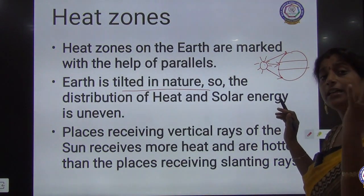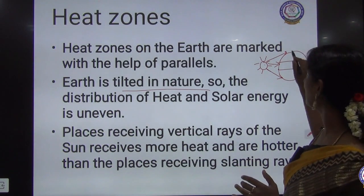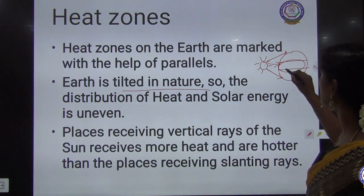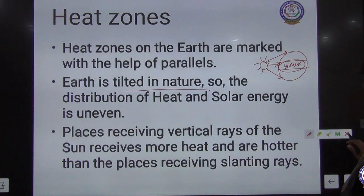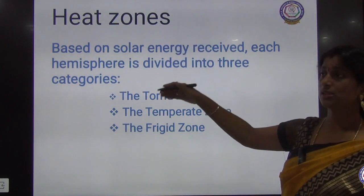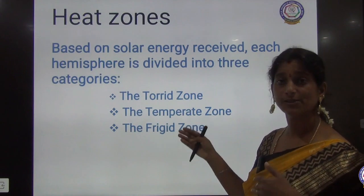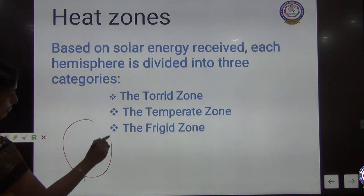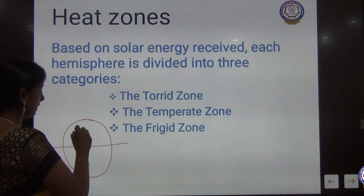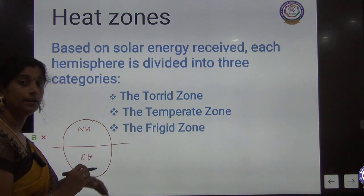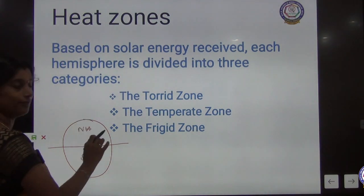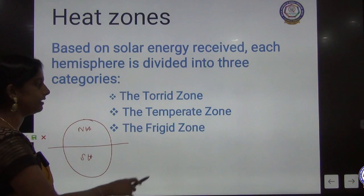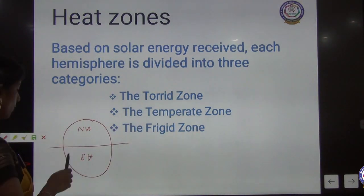The places receiving vertical rays from the sun are the hottest on Earth. Places receiving slanting rays are less hot. Based on this solar energy distribution, each hemisphere is divided into three categories: torrid zone, temperate zone, and frigid zone. Both the Northern Hemisphere and Southern Hemisphere are each divided into these three zones.